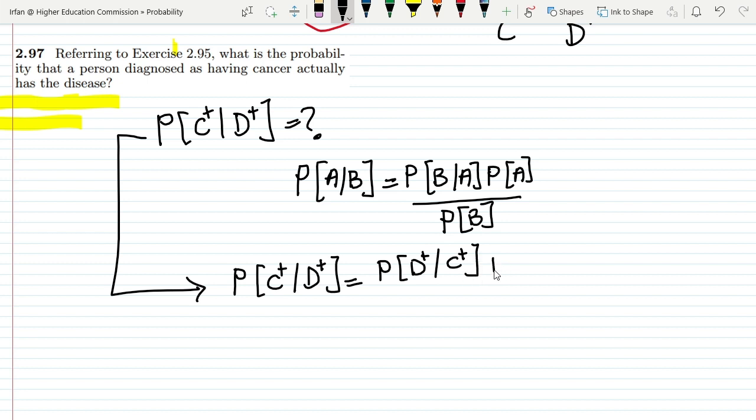multiplying it with the probability of the disease dividing it over the probability of the diagnosis. This is the overall scenario we have.